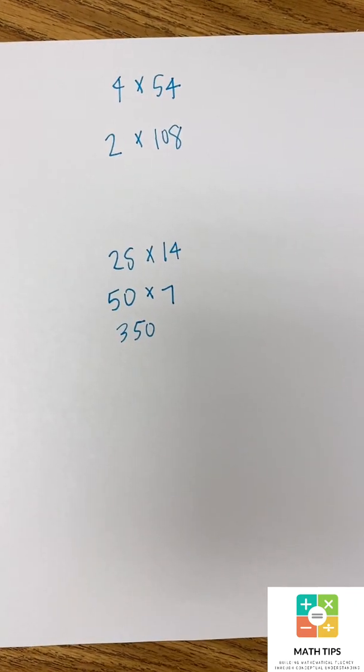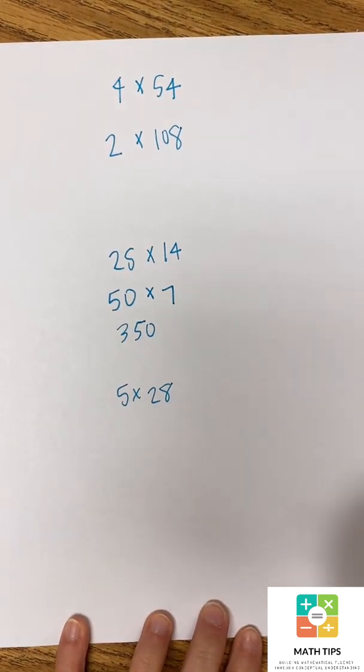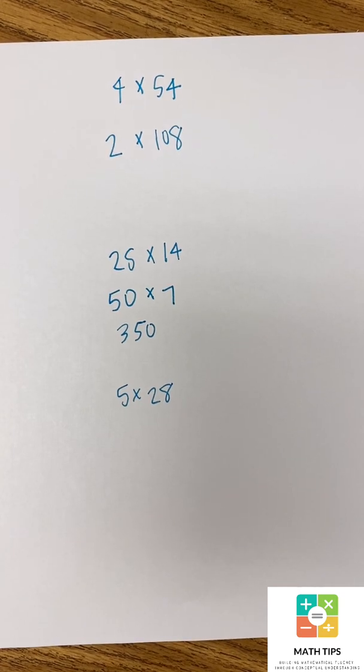Another good example of this would be 5 times 28. So they would double and half. So again, they would double 5, that's 10, and then half 28. That's 14 and then they could easily in their head do 10 times 14 which is 140.